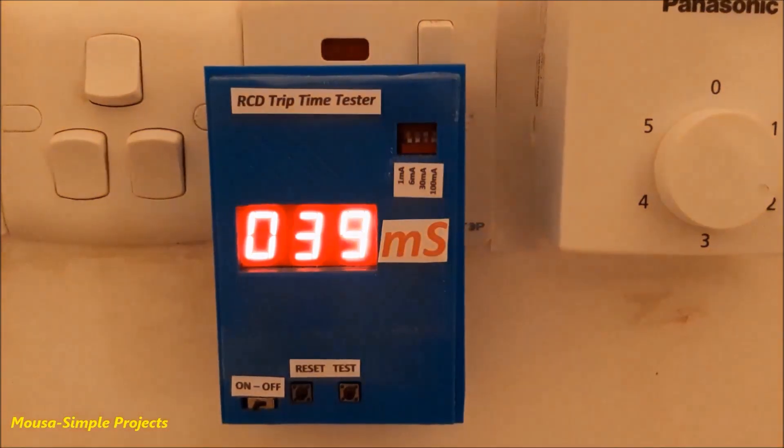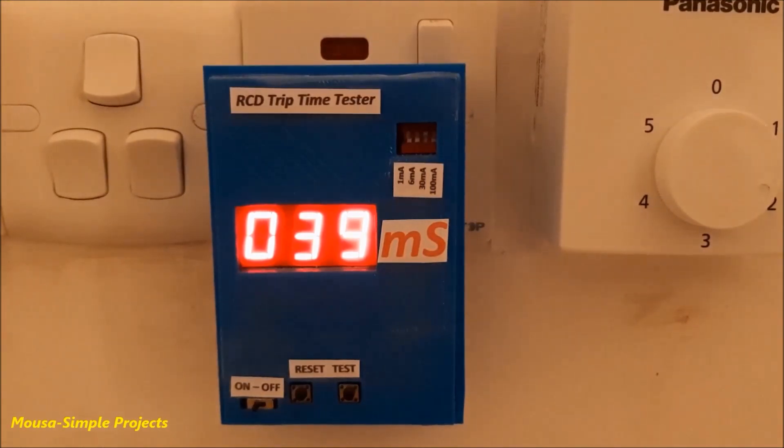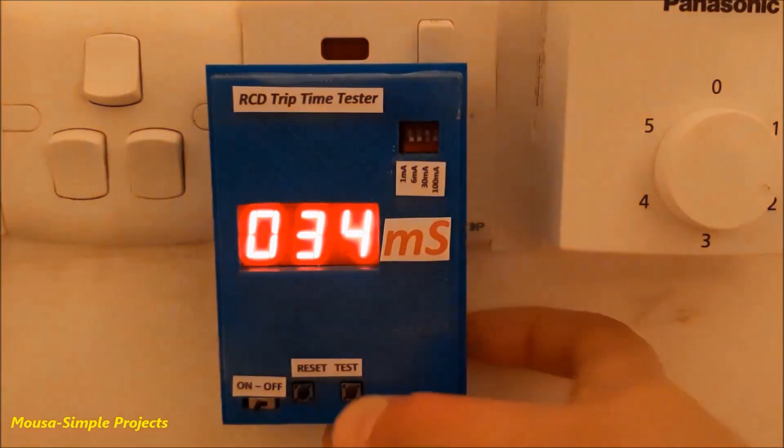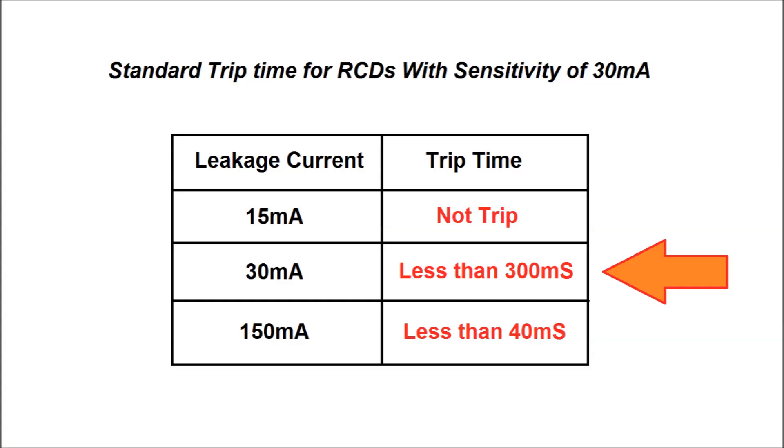This time, the reading number is 39 milliseconds, and one more time, 34 milliseconds. So according to this table, my RCD is working well.